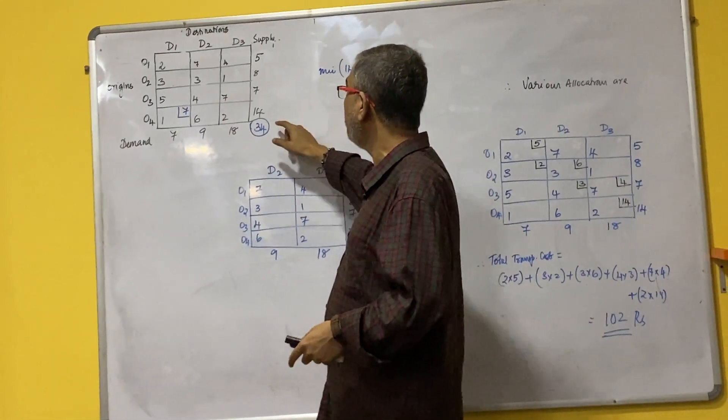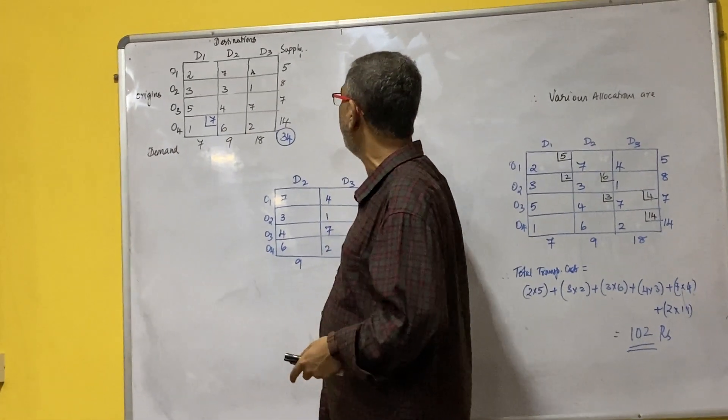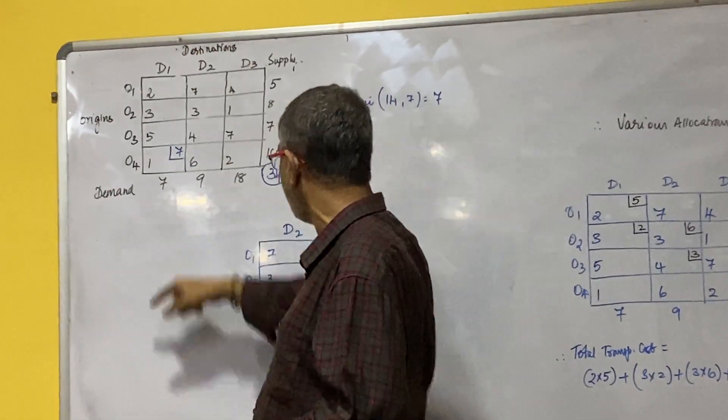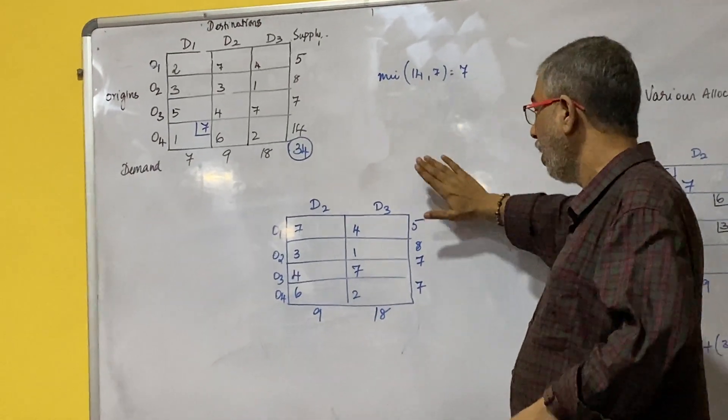After allocating to O4D1 minimum of 14,7, I allocated 7 and clearly I can understand that D1 column gets deleted and I got the reduced rate.